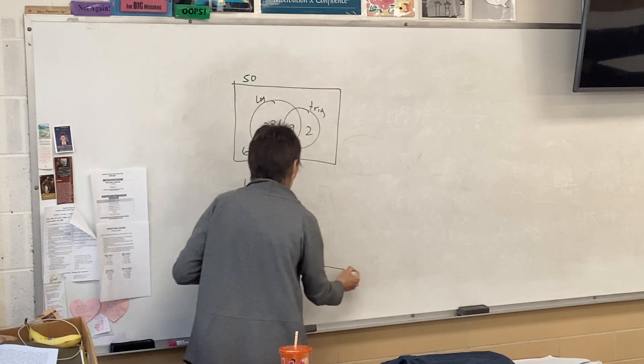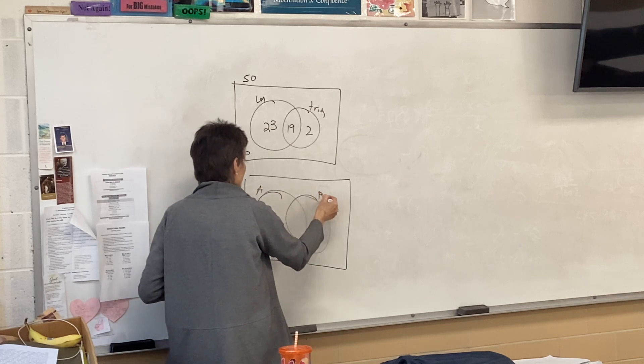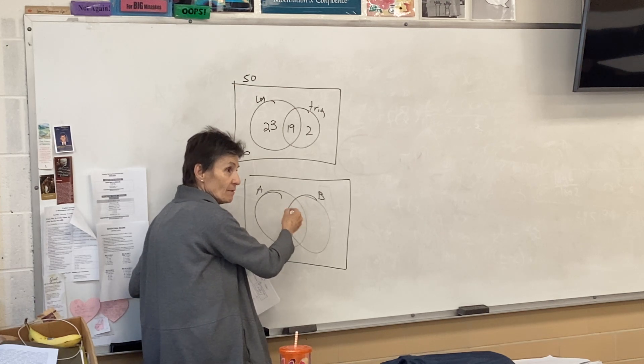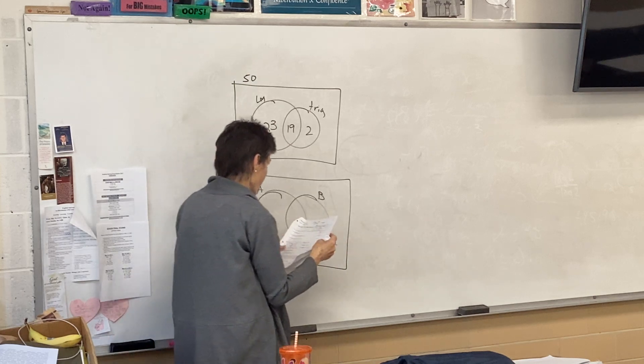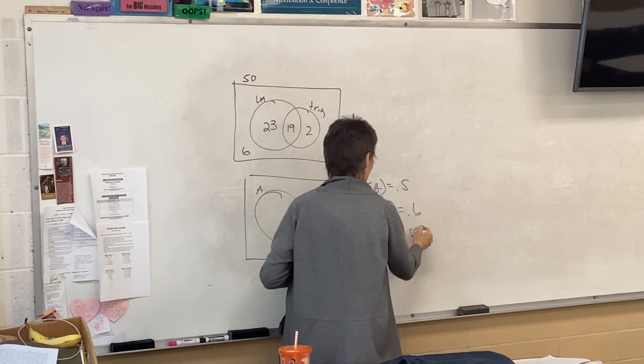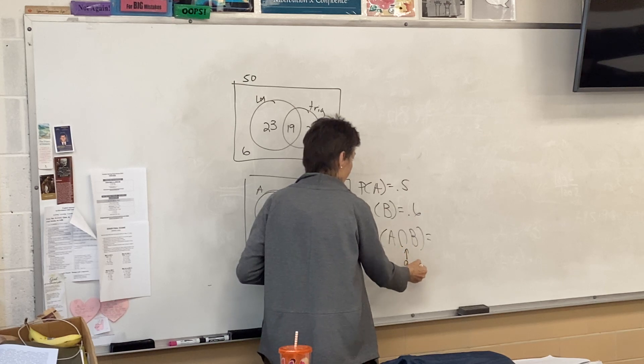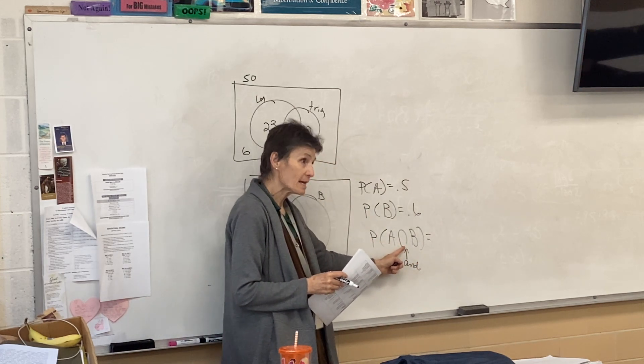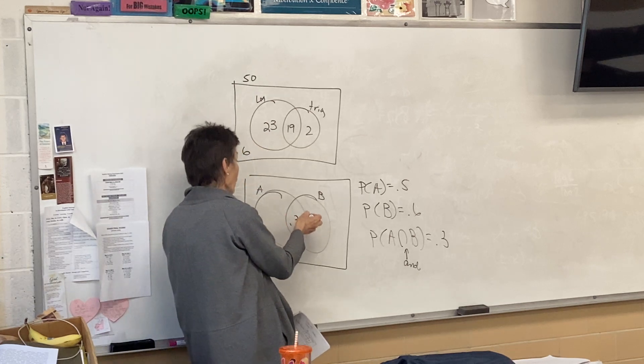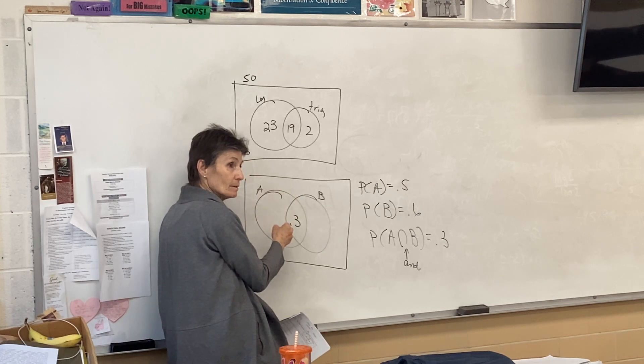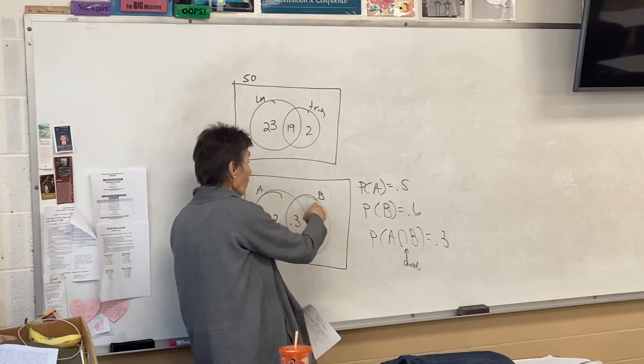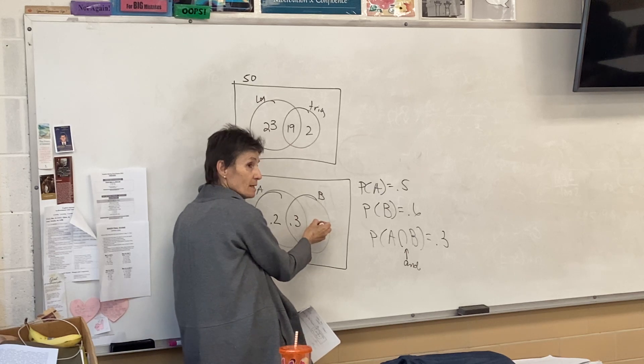All right. Now we have another Venn diagram. And this is a probability one. So we talked yesterday that what do we know about what's inside the circles here? It's supposed to add up to one, and if it doesn't, then whatever's left is out here. All right. So what do we know? We have a probability of A's is 0.5. The probability of B's is 0.6. And what does this mean? Do you remember? What does this symbol mean? Banana. Banana. That's an and. Very good.